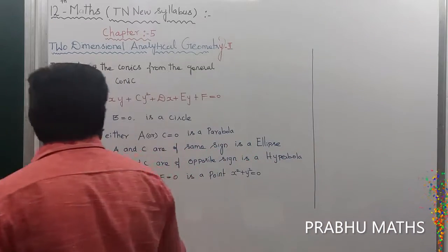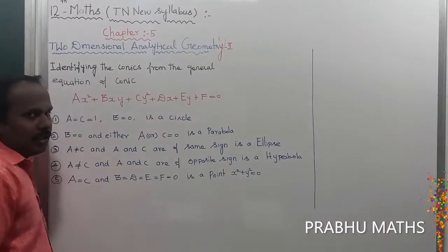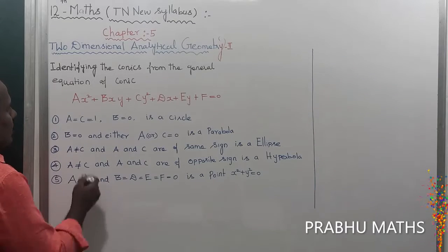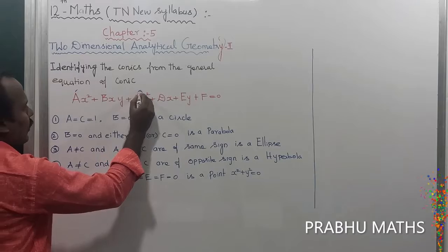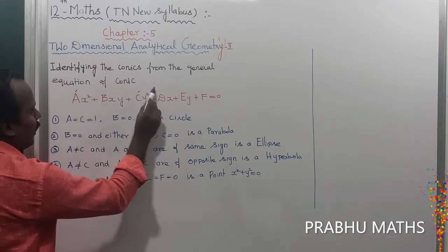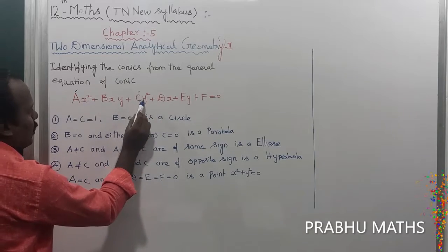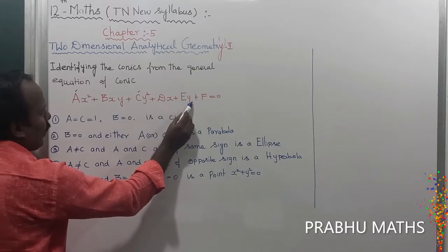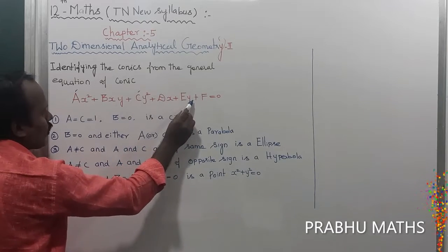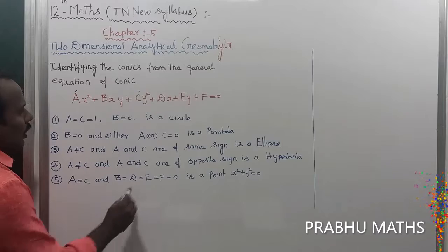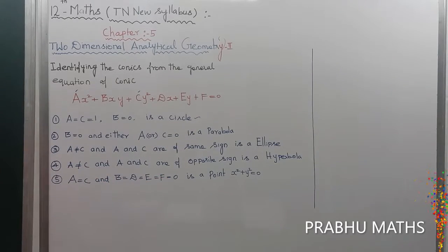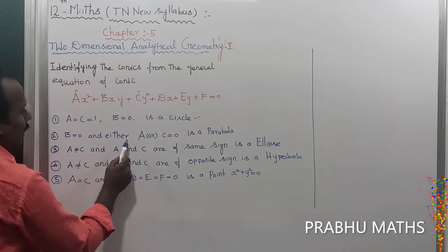First condition: suppose the conic is a circle. Then the a value and c value are both equal to 1, and the b value is equal to 0. The remaining terms give x² + y², which corresponds to (x - h)² + (y - k)² = r², and that is called a circle.